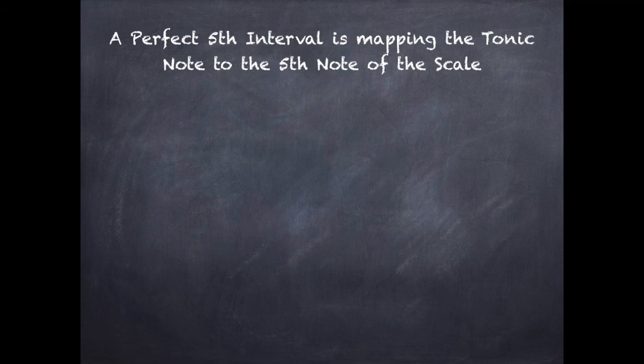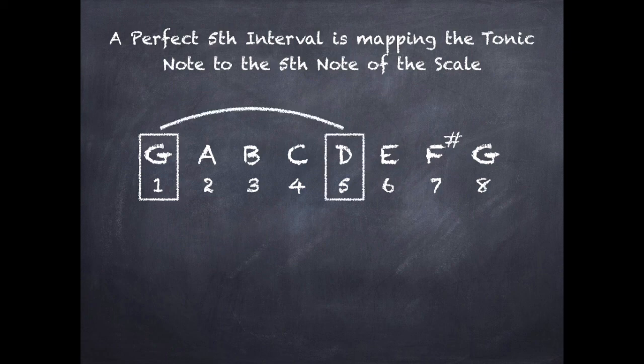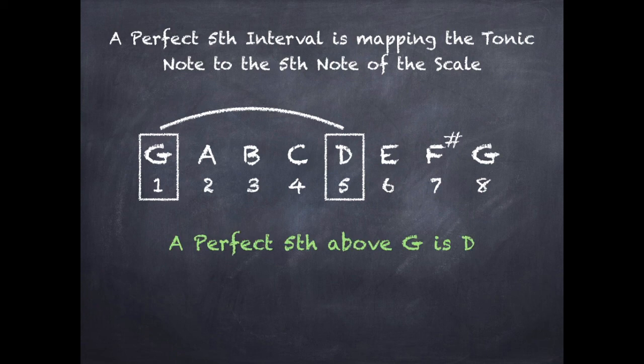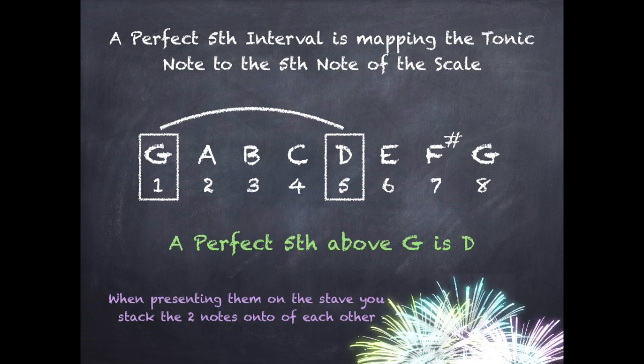A perfect fifth interval maps the tonic to the fifth note of the scale. I go from the first note of the G major scale, G, to the fifth note, D. So a perfect fifth above G is D. When I present them on the stave, I stack them.